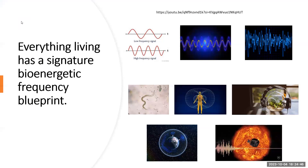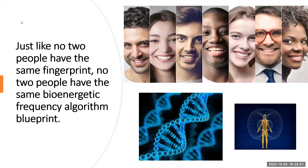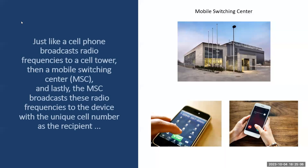Every living thing has a signature bioenergetic frequency blueprint. Just like no two people have the same fingerprint, no two people have the same bioenergetic frequency algorithm blueprint, as you can see in the bottom left picture of the DNA strand with the depicted algorithm in the middle of it. Just like a cell phone broadcasts radio frequencies to a cell tower, then a mobile switching center or MSC, and lastly, the MSC broadcasts these radio frequencies to the device with the unique cell number as the recipient.